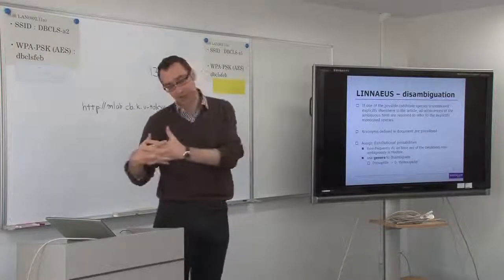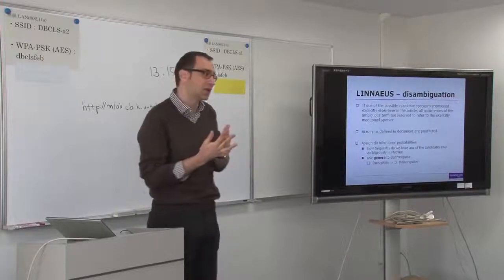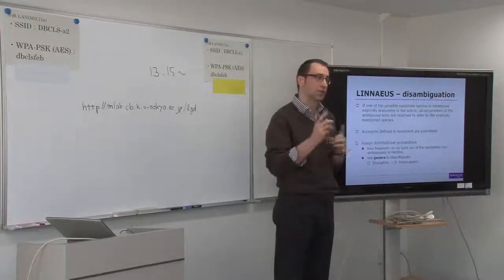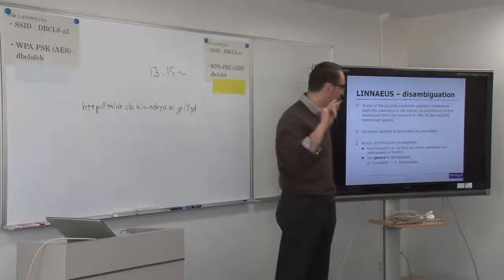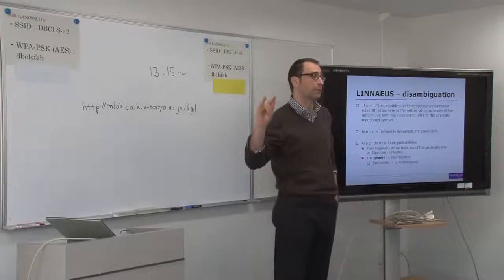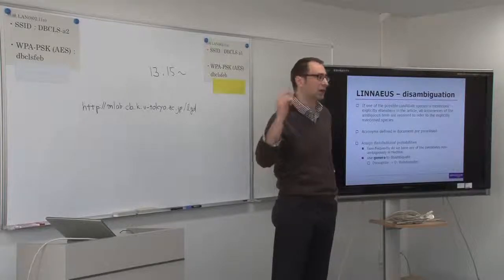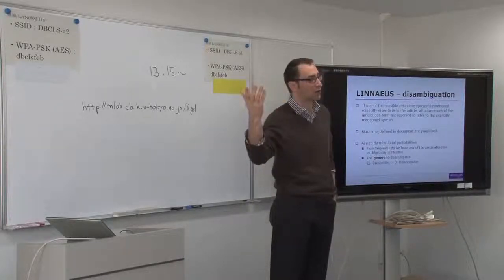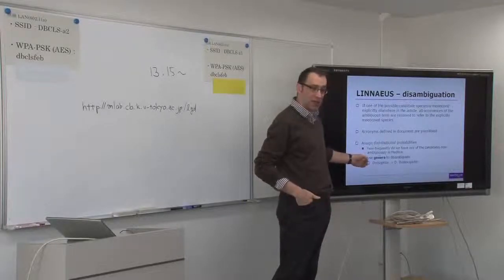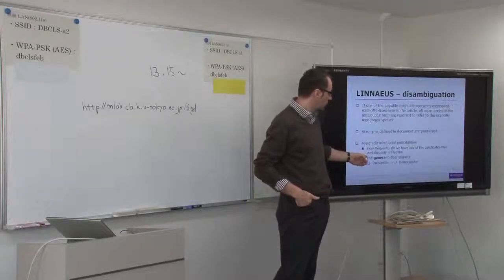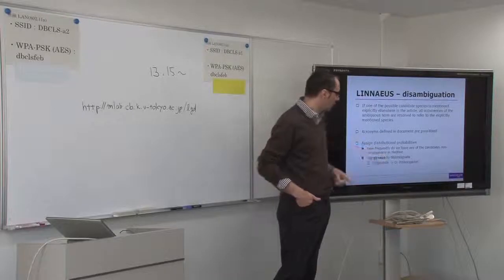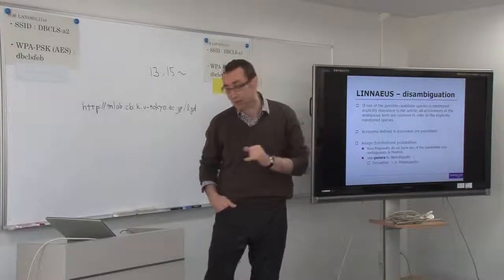We also pre-compute distributional probabilities by processing MEDLINE on a large scale to see how frequently each candidate term appears non-ambiguously in the literature. Based on that, if we still can't disambiguate, we can say: based on background probability from PubMed, in 99% of cases E. coli refers to Escherichia coli, so we disambiguate accordingly. We also handle genera names — for example, drosophila in most cases is a synonym for Drosophila melanogaster, so we do that kind of disambiguation and linking as well.